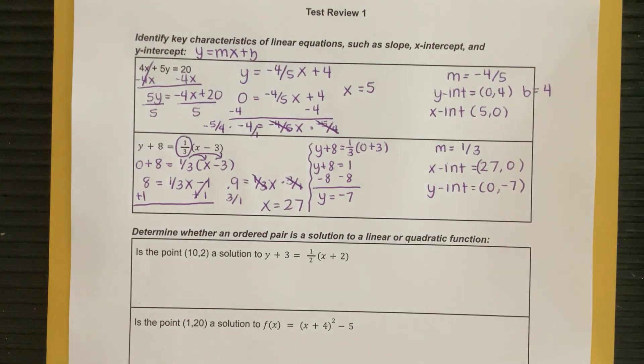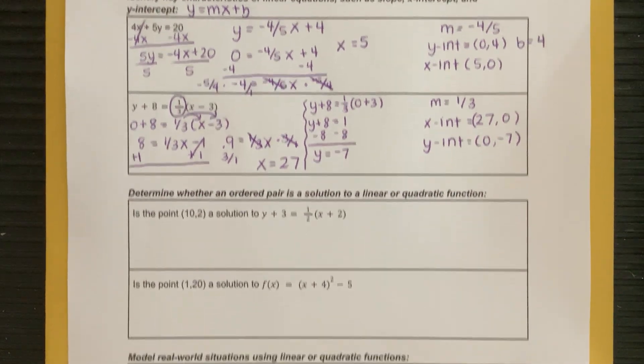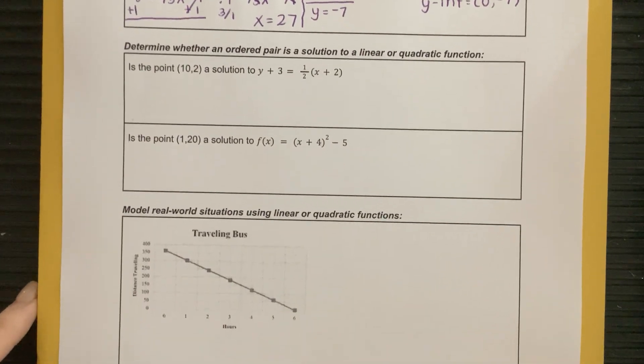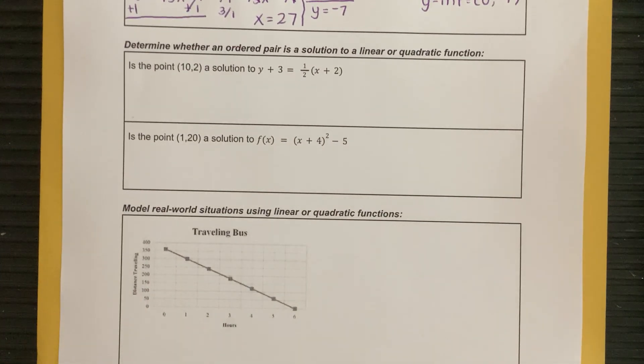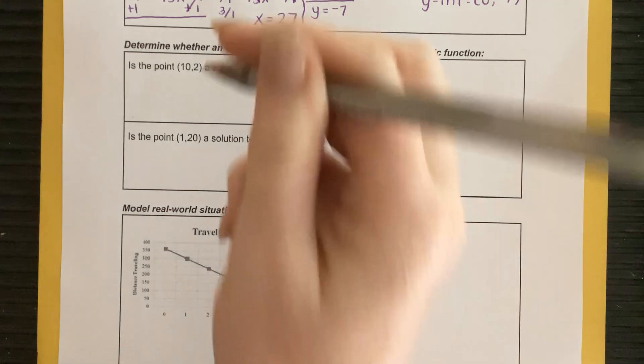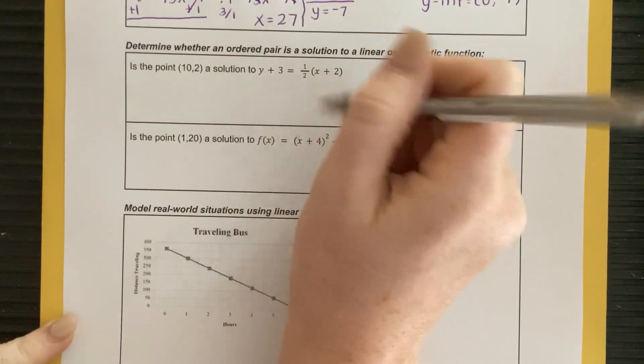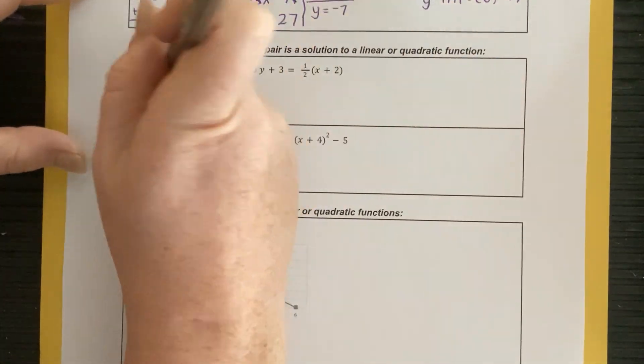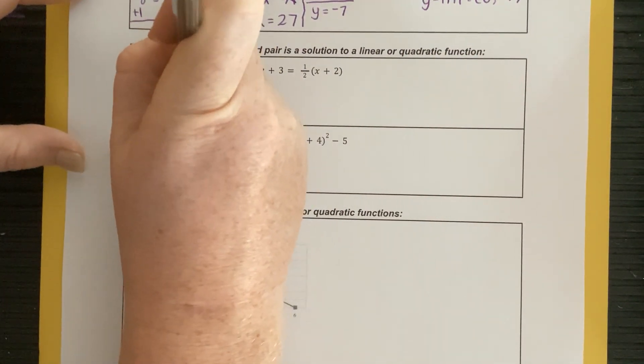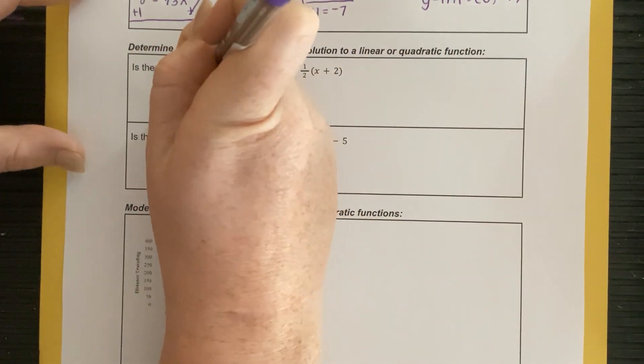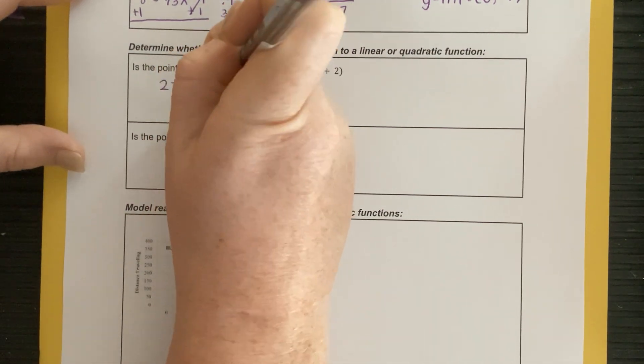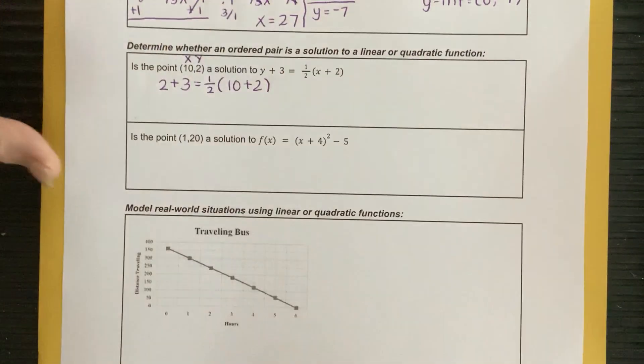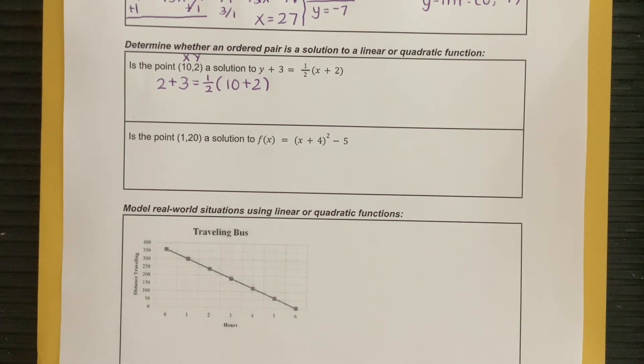Okay, so again, that's more algebra 1. That just should be review. Okay, next thing we're going to talk about is determining whether an ordered pair is a solution to a linear and to a quadratic. So to do that, you're going to take your point and you're going to plug it in for your x and y value. So this is x comma y. So I'm going to plug it in and it's going to be 2 plus 3 is equal to 1 half 10 plus 2. So just taking that value and plugging them in for my x and y's.